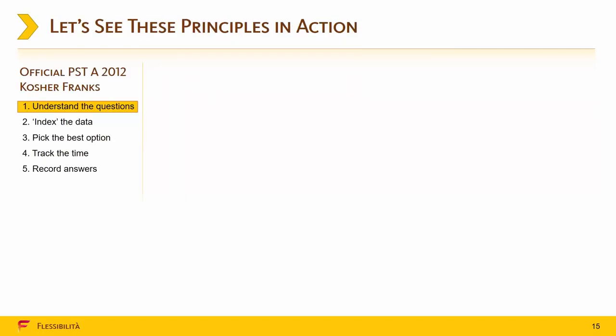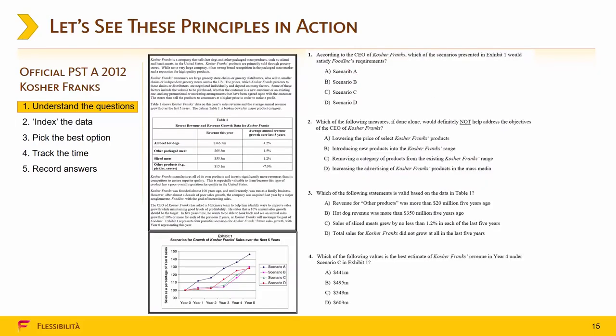Okay, now let's see how this theory works in practice. Here's the official PST A 2012. Question number 1: According to the CEO of Kosher Franks, which of the scenarios presented in Exhibit 1 would satisfy Fuding's requirements? Okay, Fuding's requirements. So we make a note that we'll need to look for CEO and we'll need to look for requirements. Question number 2: Which of the following measures, if done alone, would definitely not help address the objectives of the CEO of Kosher Franks? So we'll make a note that we'll need to find the objectives of the CEO.